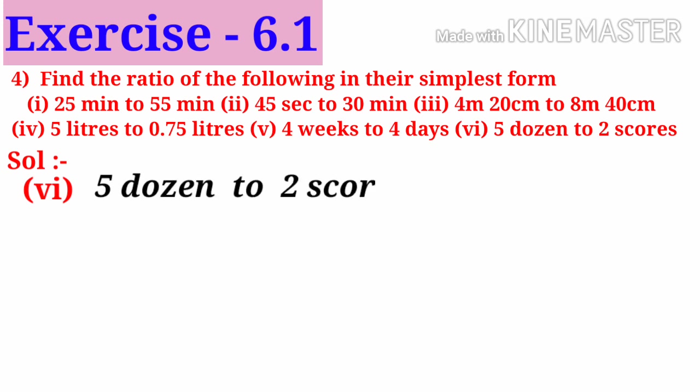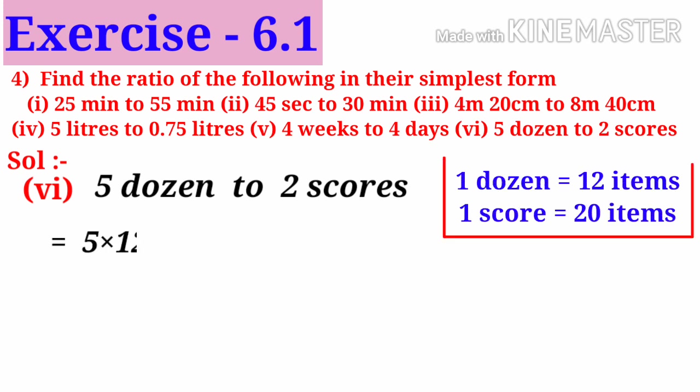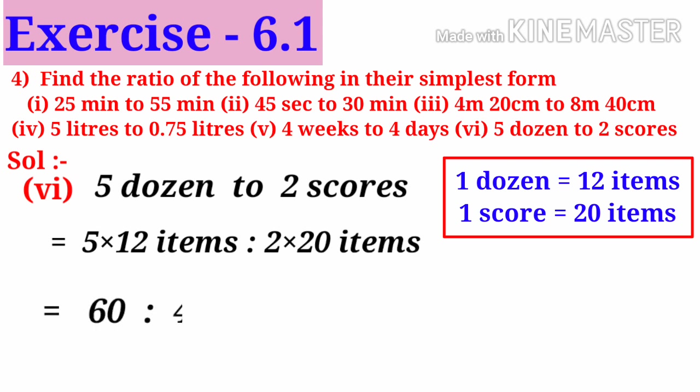Number 6: 5 dozen to 2 scores. Observe that dozen and scores are different quantities. We know that 1 dozen is 12 items and 1 score is 20 items. So 5 dozen equals 5 into 12 items, and 2 scores equals 2 into 20 items. On multiplication, 60 to 40. On simplification by 20, we get 3 to 2. The ratio is 3 is to 2.